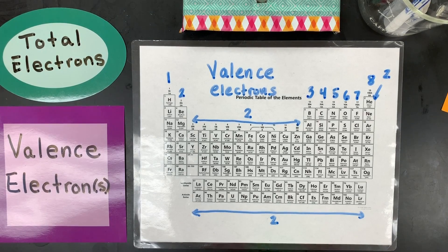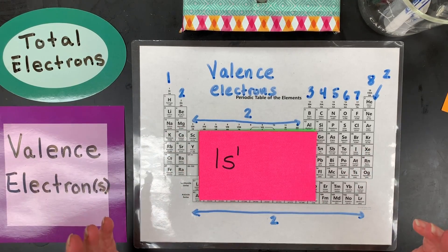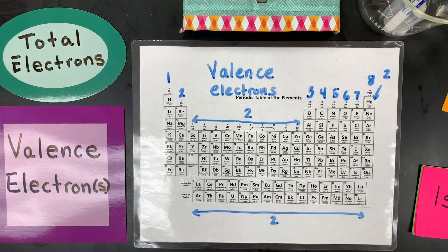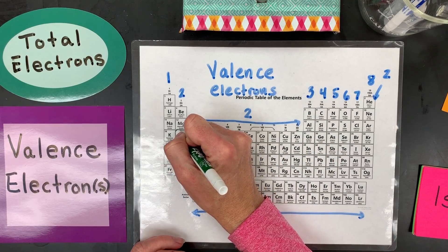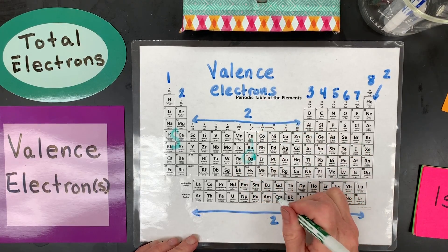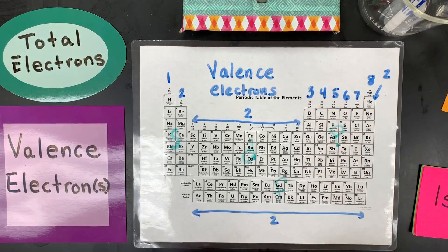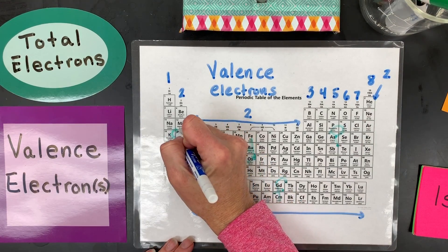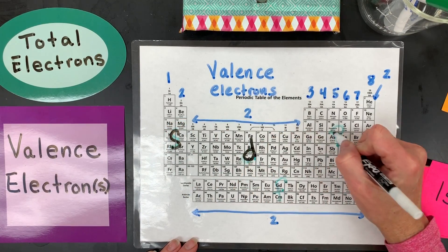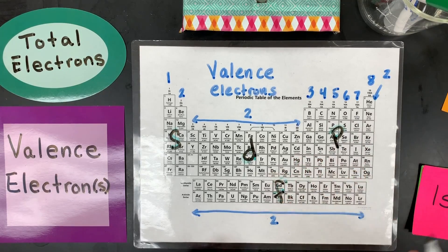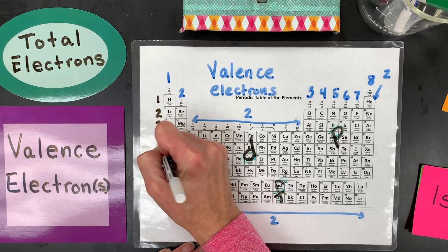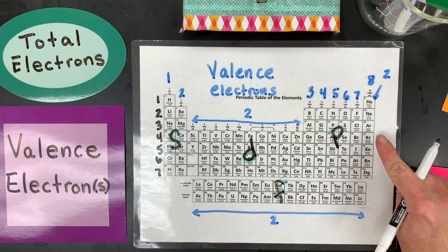Electron configurations are the real reason why the valence electrons are the way they are and how many there are. On the periodic table there are some more patterns. The s-block on the left are s orbital electrons, the transition metals are d, the inner transition metals are f, and the right-hand block is p. This represents the highest energy level for the s and for the p electrons.